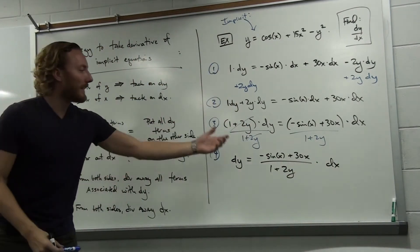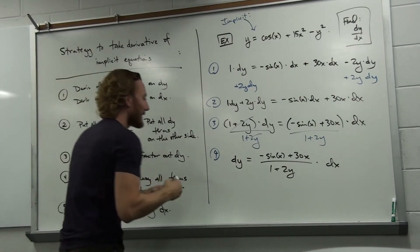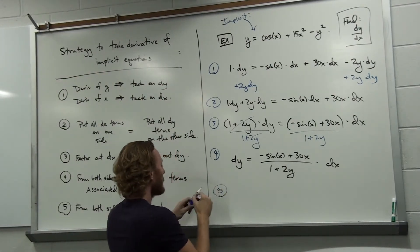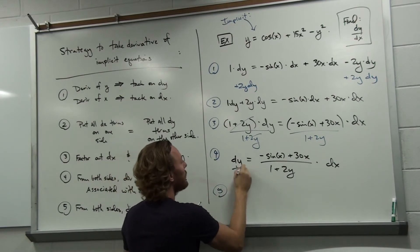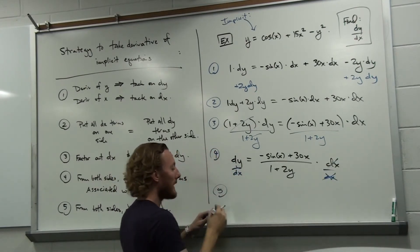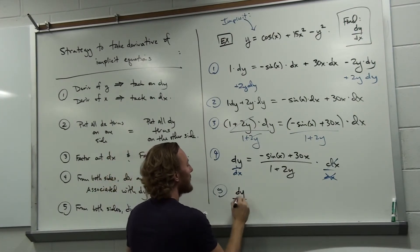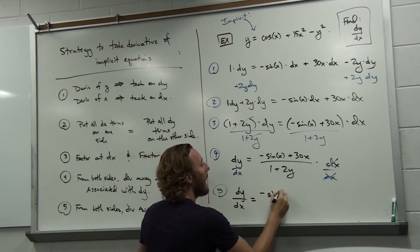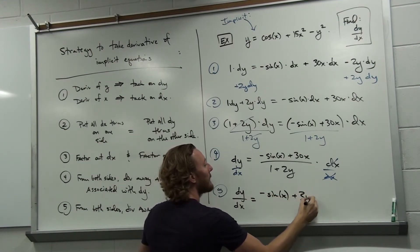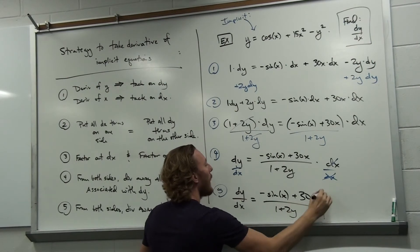And now, to get dy over dx, as the last step, divide both sides by dx. Divide the left side by dx and divide the right side by dx. On the right-hand side, the dx drops away. On the left-hand side, you get the dy over dx that you were after. And this equals minus sine x plus 30x over 1 plus 2y.